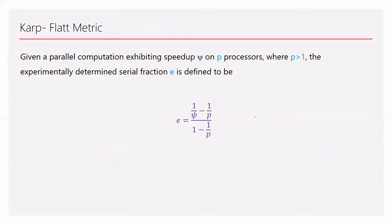Now we come to the statement of the Karp-Flatt metric. Given a parallel computation exhibiting a speedup of Psi on P processors, where P is greater than 1, the experimentally determined serial fraction E is defined as: E = (1/Psi − 1/P) / (1 − 1/P).